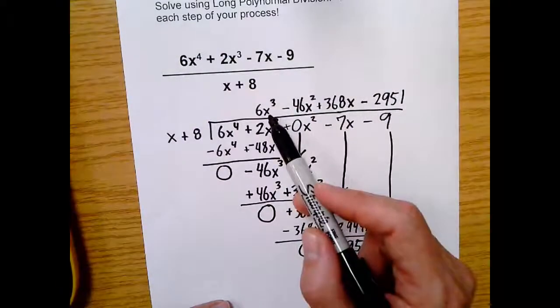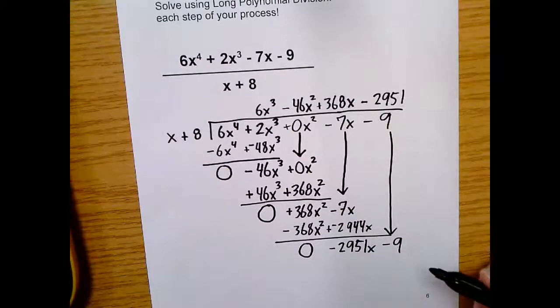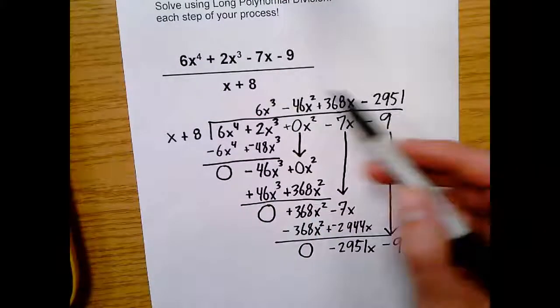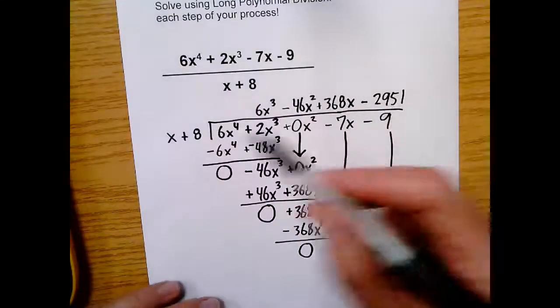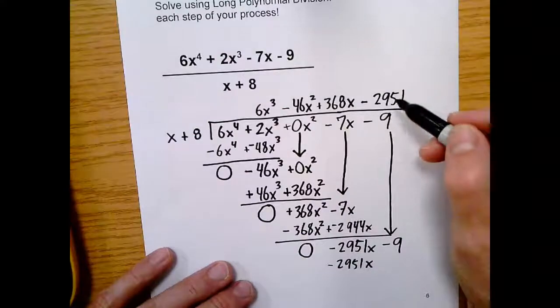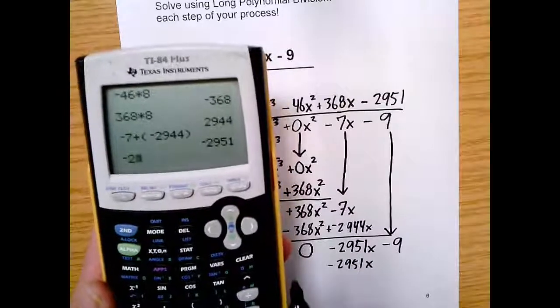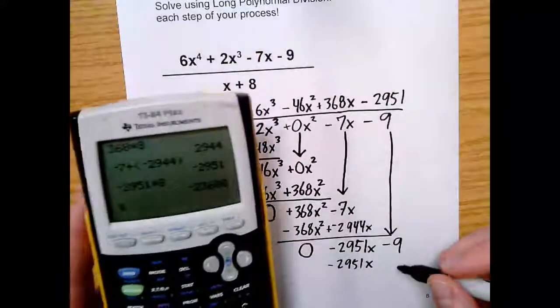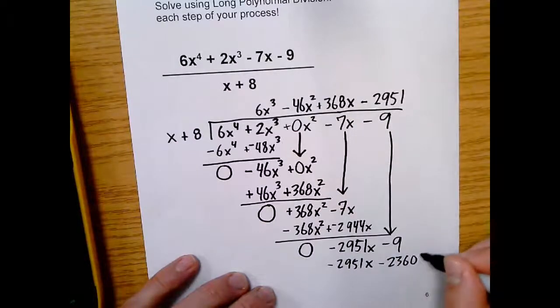So we brought it down. We multiply here. So the last step is to multiply back down. It's like distributing. So you say, what is negative 2,951 times x? Well, that is negative 2,951x. And then what is negative 2,951 times 8? I certainly can't do that in my head. So negative 2,951 times 8. We get a big old number. That's okay. We get negative 23,608.